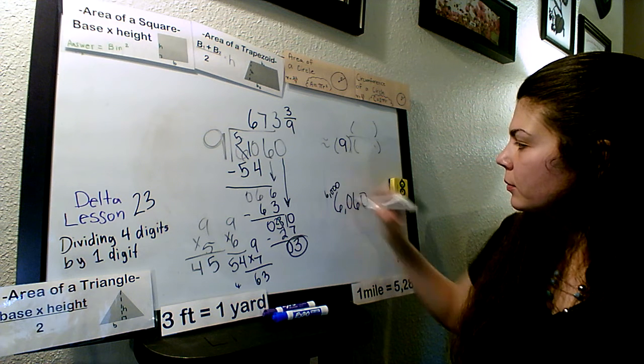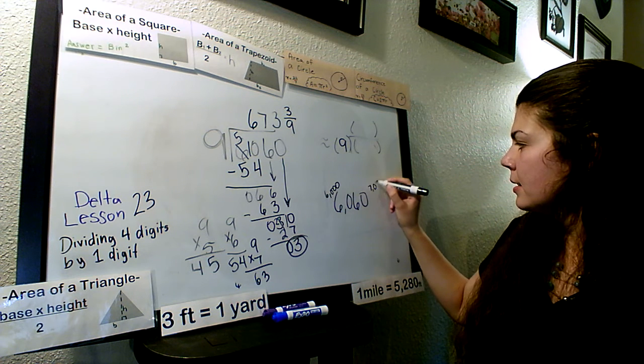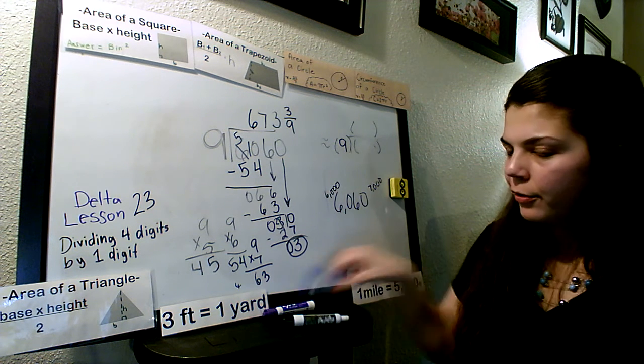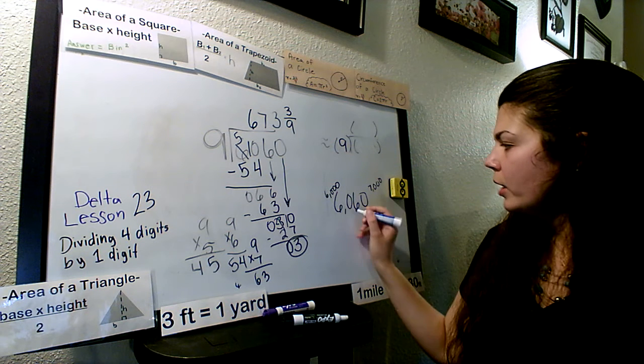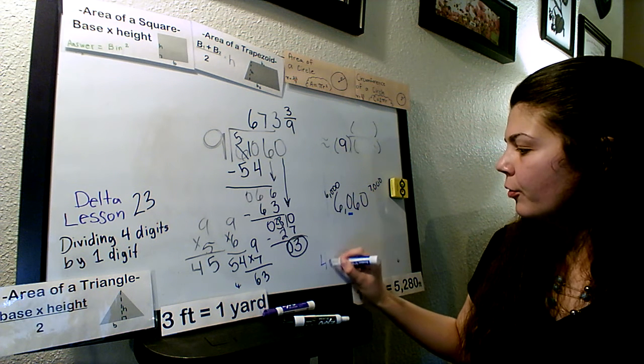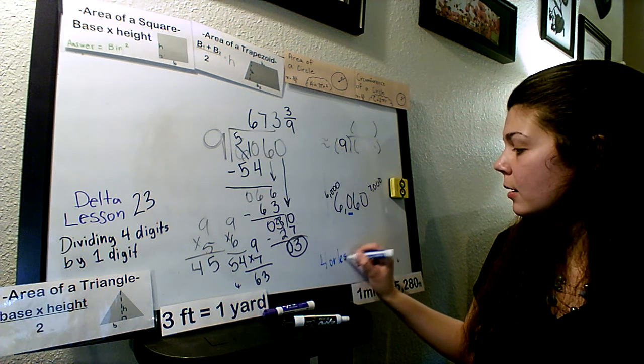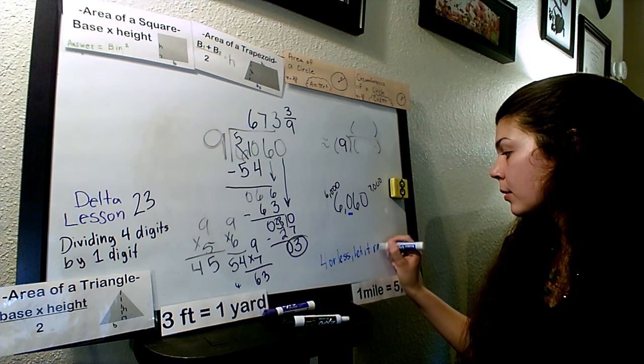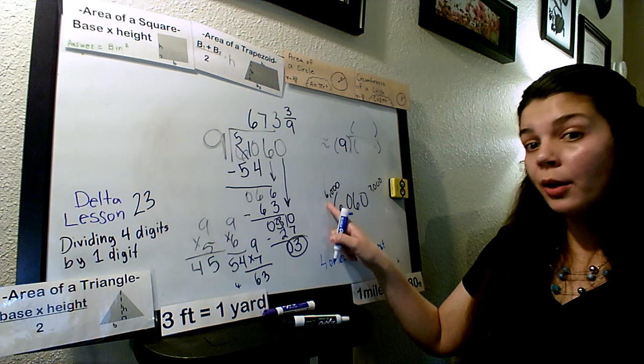6060. We're rounding in the thousands place. 6,000 or 7,000. Alright. If you remember from a few weeks ago, we look at our next number here. Is that 4 or less? Let it rest.